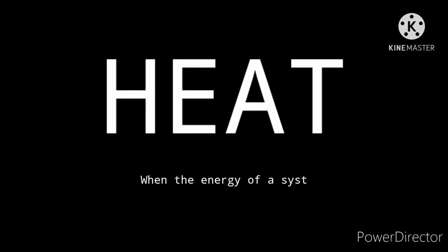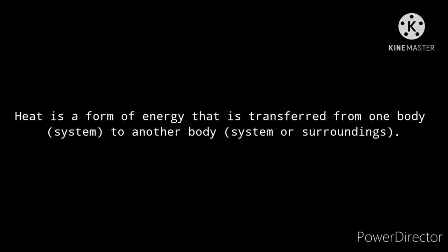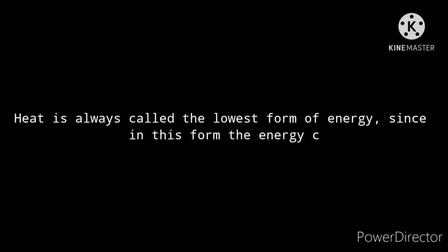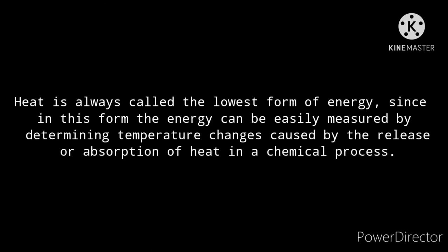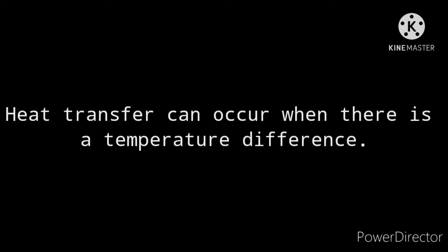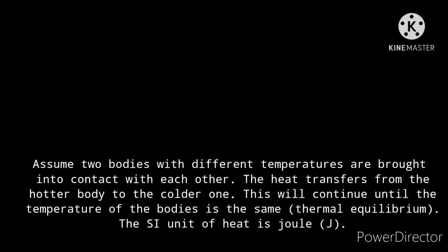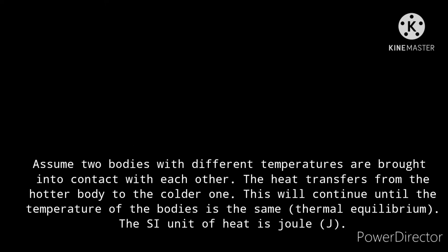Heat. When the energy of a system changes as a result of a temperature difference between the system and its surroundings, we say that the energy has been transferred as heat. Heat is a form of energy transferred from one body or system to another body, system, or surroundings. Heat is called the lowest form of energy since it can be easily measured by determining temperature changes caused by the release or absorption of heat. Heat transfer can occur when there is a temperature difference. When two bodies with different temperatures are brought into contact, heat transfers from the hotter body to the colder one until thermal equilibrium is reached. The SI unit of heat is the joule (J).